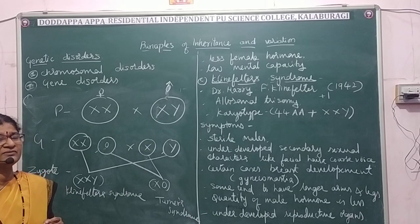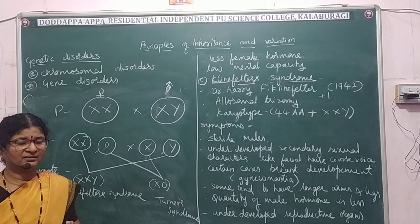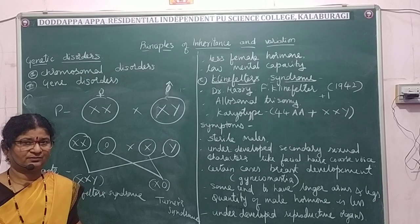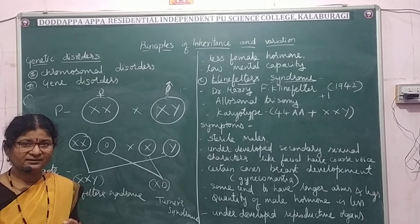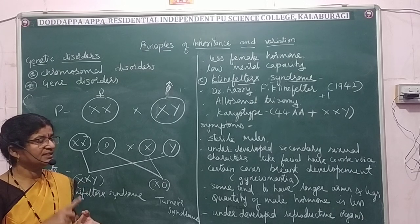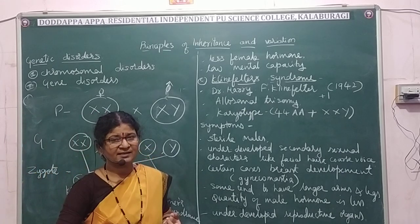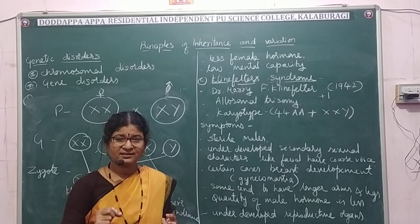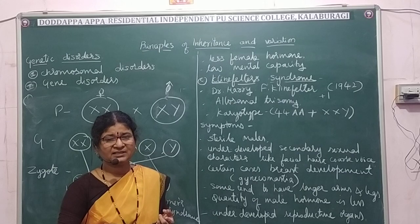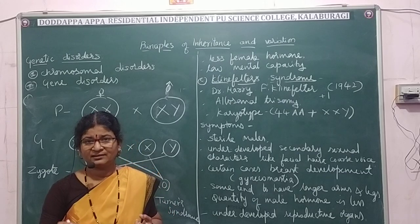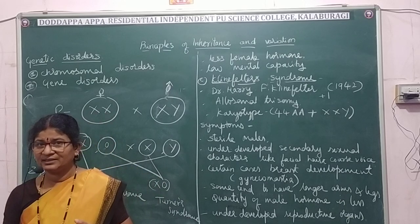In this video class, you have learned about Down syndrome, Turner's syndrome, and Klinefelter syndrome. Down syndrome is an autosomal trisomy, Turner's syndrome is an allosomal monosomy, and Klinefelter syndrome is an allosomal trisomy. Each disease is asked for three marks in the annual exam. In the coming period, we will study gene disorders.